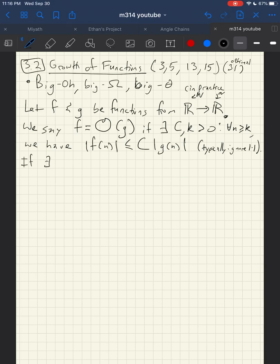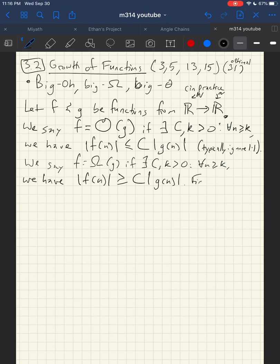If there exists, so basically, this is talking about how quickly the functions grow. We say that F is big omega of G if there exists constants C and K positive, such that for all n greater than or equal to K, we have absolute value of F of n is greater than or equal to C times absolute value of G of n. It's the same idea, except we've got a greater than instead of a less than.